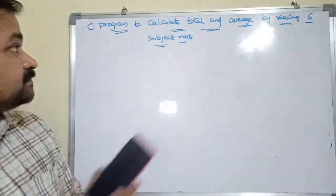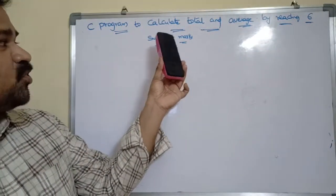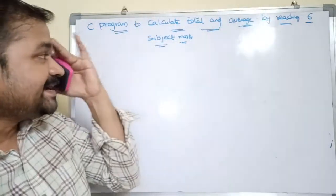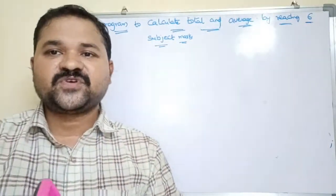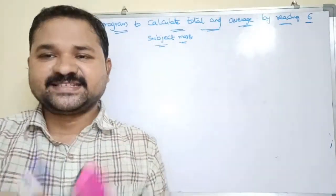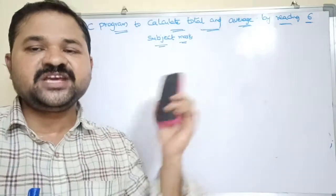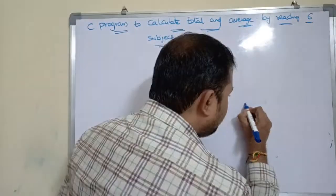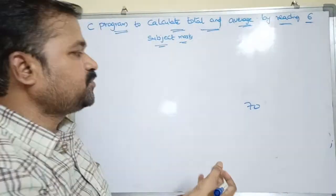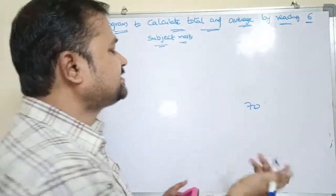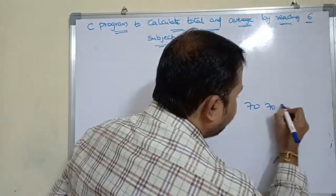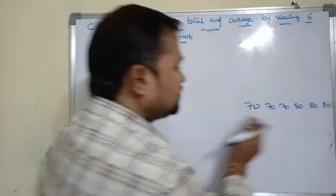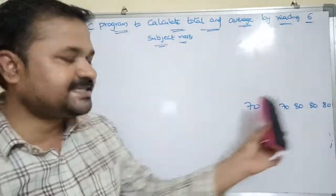Now let's see about this program. C program to calculate total and average by reading 6 subject marks. So we have to read 6 subject marks and we need to calculate total and average. Let the marks be like this: 70, 70, 70, 80, 80, 80. So these are 6 subject marks.